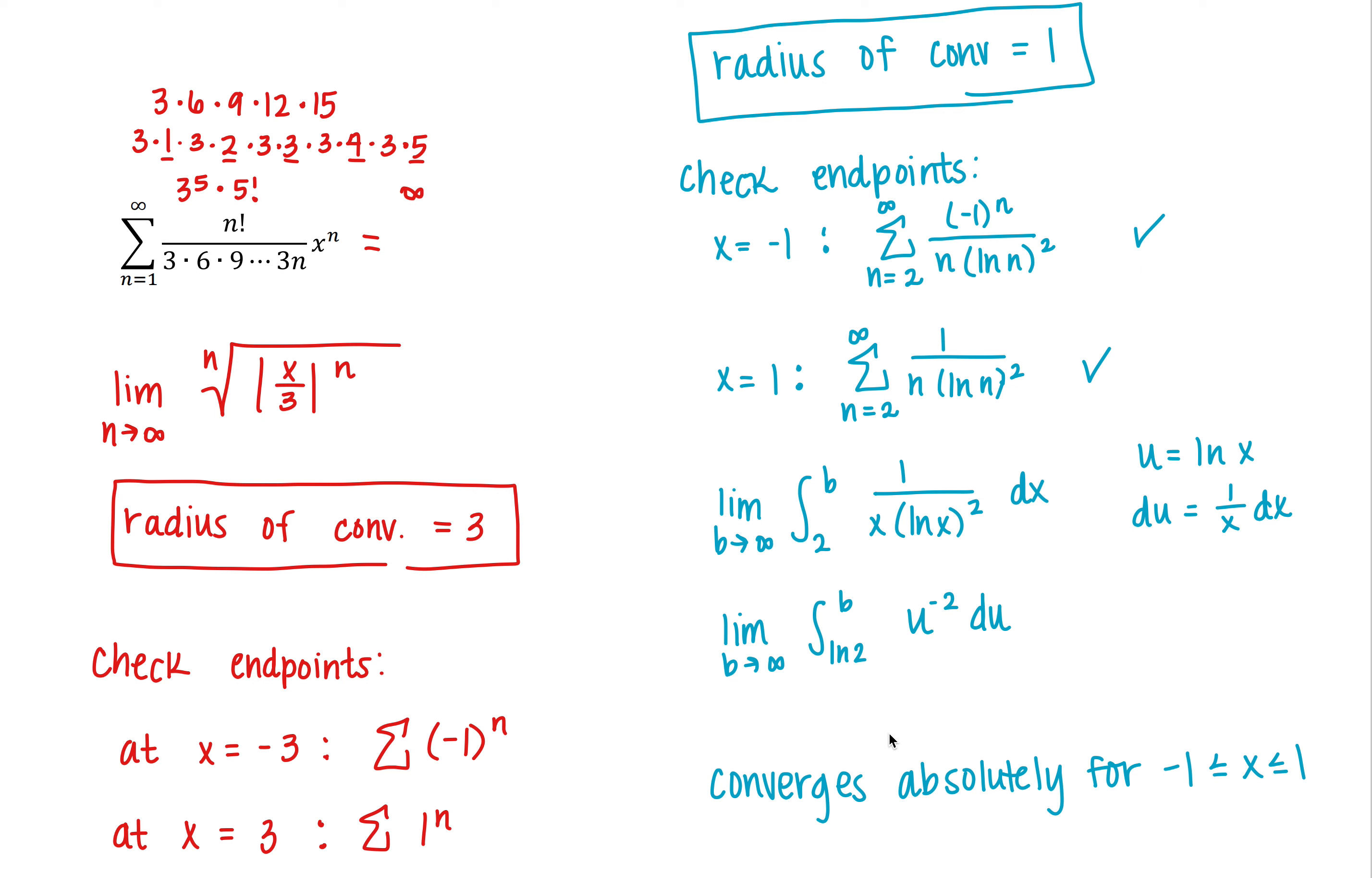So this section really is going to, even in some ways more than the last one, is going to bring everything that we've learned together as you're checking for the radius of convergence and then you're checking the endpoints. So you're really having to pull from all these different tests. I'm going to stop this one here, and we're going to look at a couple more theorems continuing in this section in the next video.